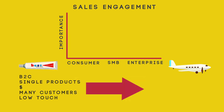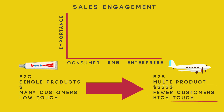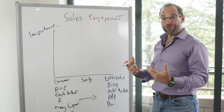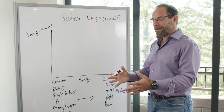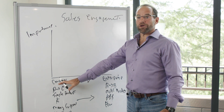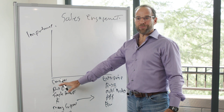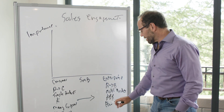As we move out toward enterprise, the shape changes — pretty much everything that was small becomes big. It's business to business, may be multi-product, involves lots of dollars, and fewer customers. We often think of enterprise as the Fortune 1000, Fortune 50, or Fortune 100 — those are a few customers you can actually list on a spreadsheet, whereas individual consumers you probably can't.